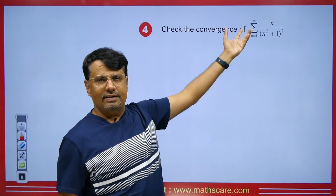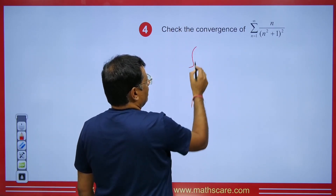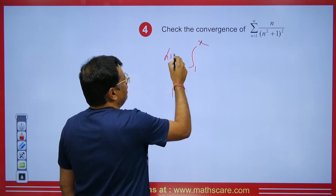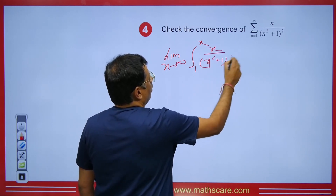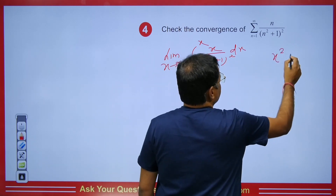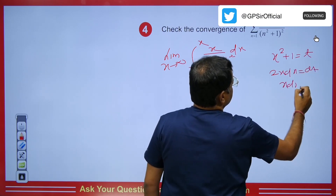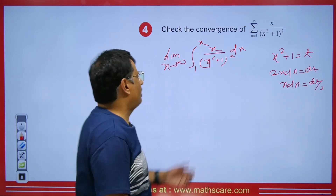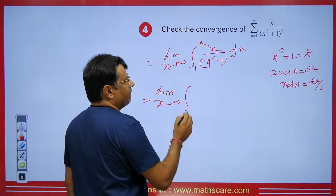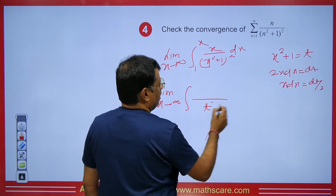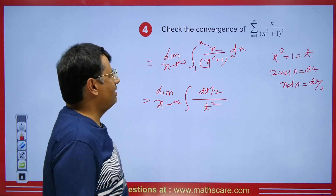The next question is similar. We have the series with general term x/(x²+1)², which is decreasing, integrable, and positive. We write the integral from 1 to infinity of x/(x²+1)² dx, or equivalently limit x tends to infinity of the integral from 1 to x of x/(x²+1)² dx. We use the substitution x²+1 = t, so 2x dx = dt, meaning x dx = dt/2.